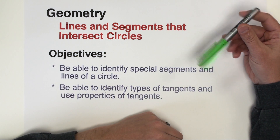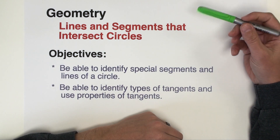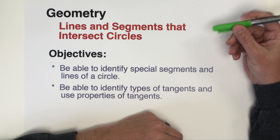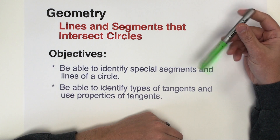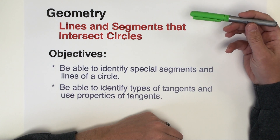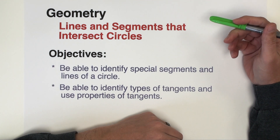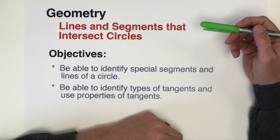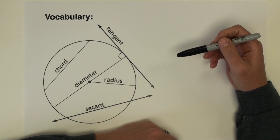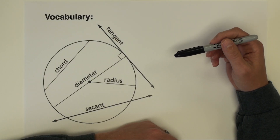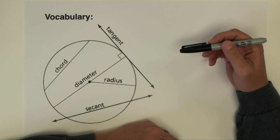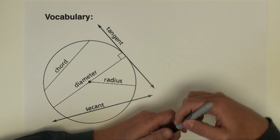Hello everyone and welcome to another math tutorial. This video will be the first in a series of video lessons investigating circles. As we begin this discussion, we're going to talk about lines and segments that intersect circles and some properties of those lines and segments. To begin, let's start by defining the different lines and segments that we are interested in.